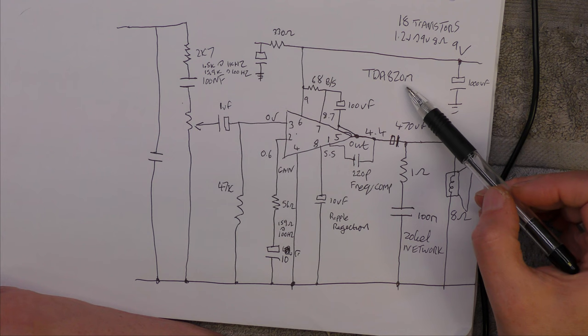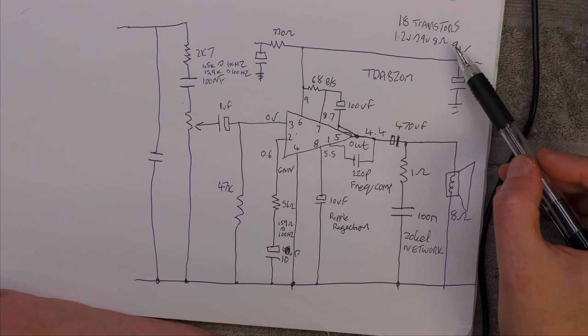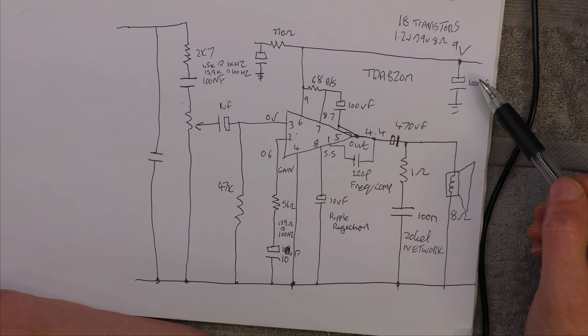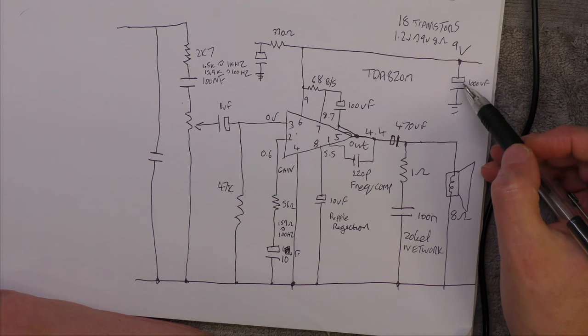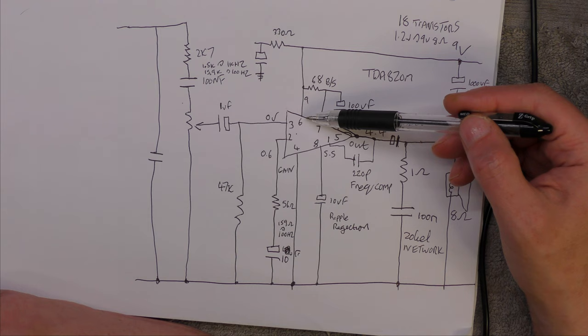Quick look at the output stage. It uses TDA820M. 18 transistors, 1.2W at 9V at 8 ohms. But depending on the internal resistance of the battery, I doubt you'd quite reach that. Good reason why there's a 1,000uF decoupling capacitor. It's when the internal resistance of these batteries increases as they age. You need to keep the impedance low or you'll get motor boating. So, basically, power is fed straight into the IC.